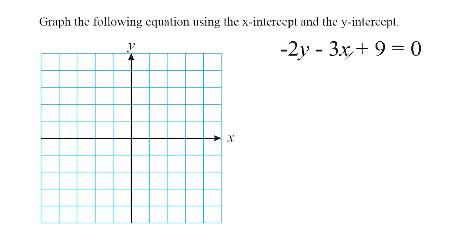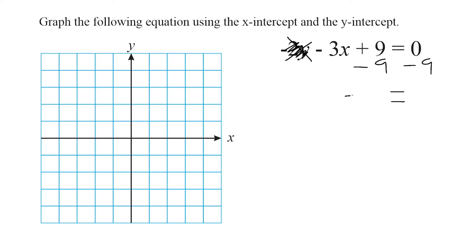Let's start by figuring out what our x-intercept is going to be by plugging 0 in for y. If we plug 0 in for y, we know that 0 times negative 2 is going to be 0, so we can just eliminate that term altogether. Now we have negative 3x plus 9 equals 0. We move the positive 9 to the other side by subtracting 9 from both sides, giving us negative 3x equals negative 9. Then we divide both sides by negative 3, which gives us x equals positive 3. So on the x-axis, we make a point at positive 3.